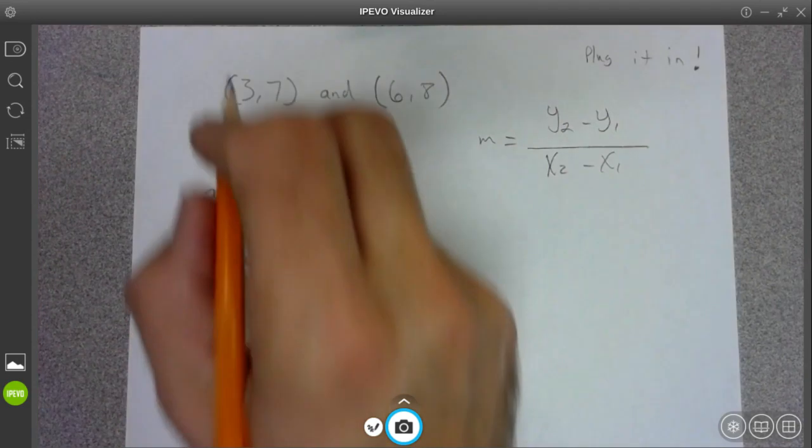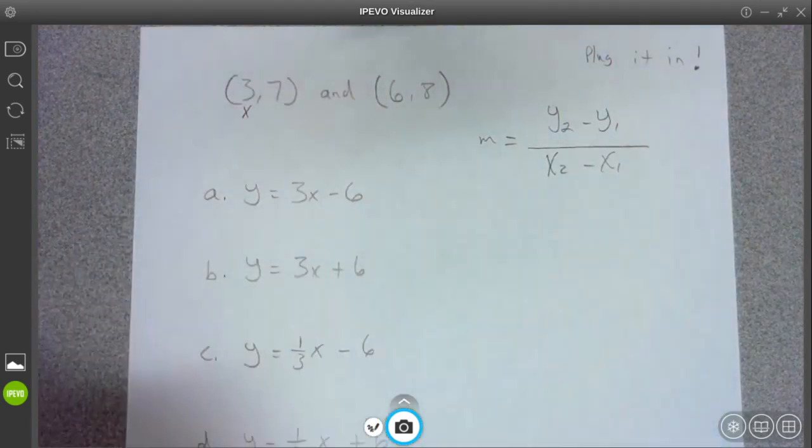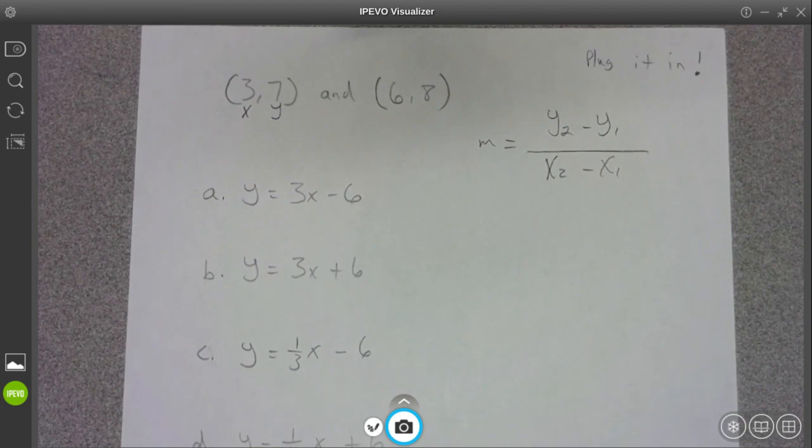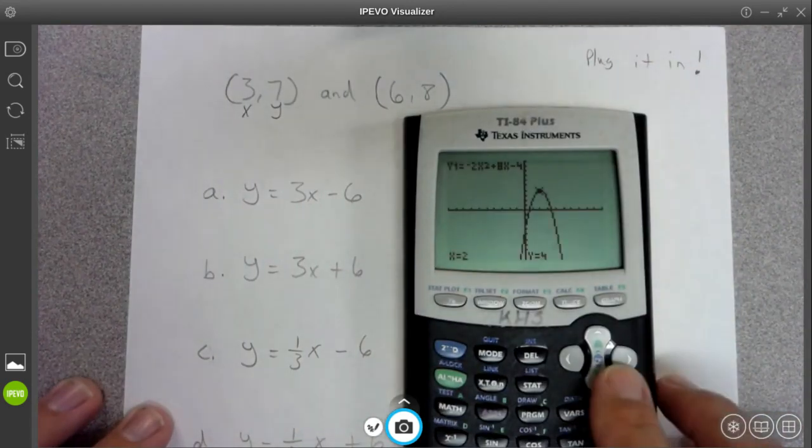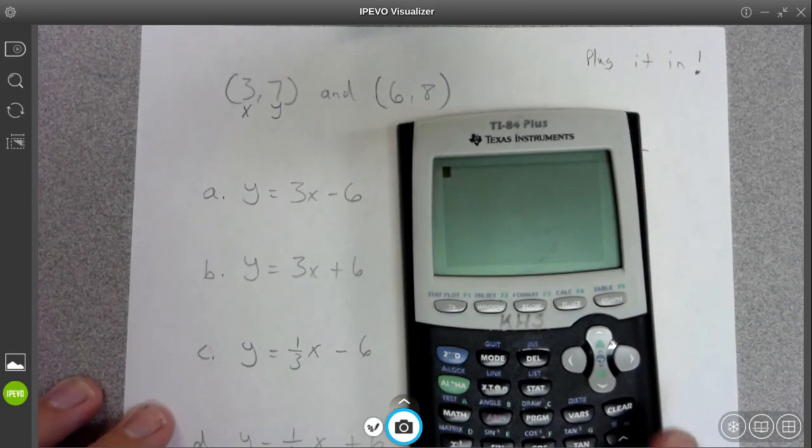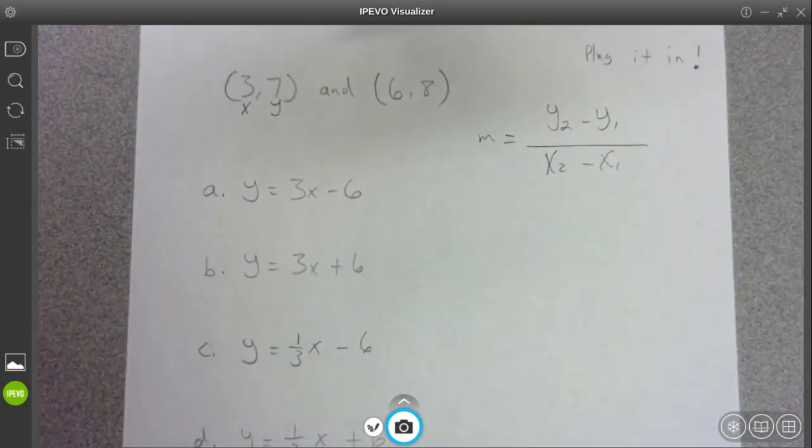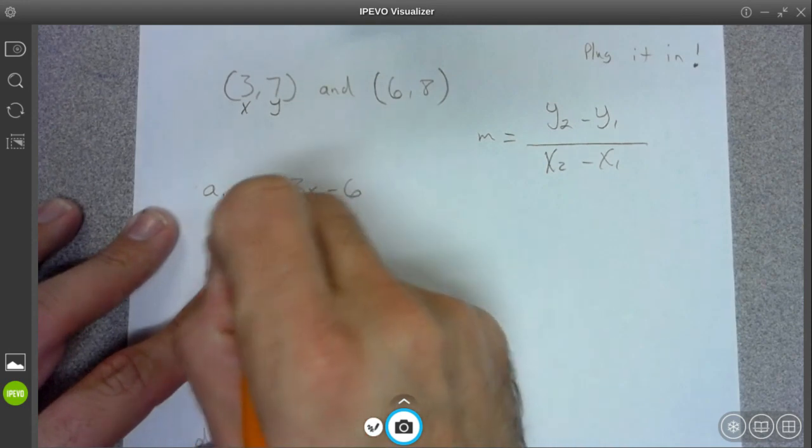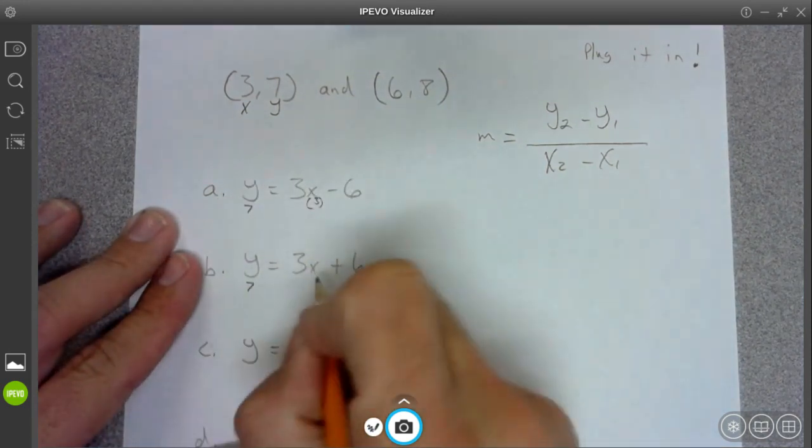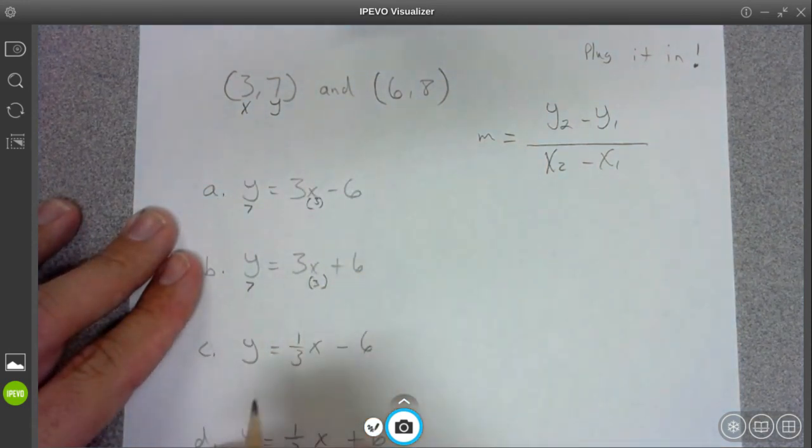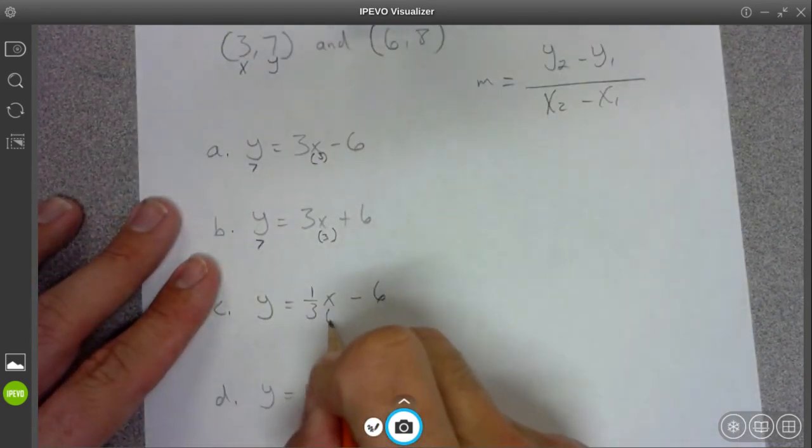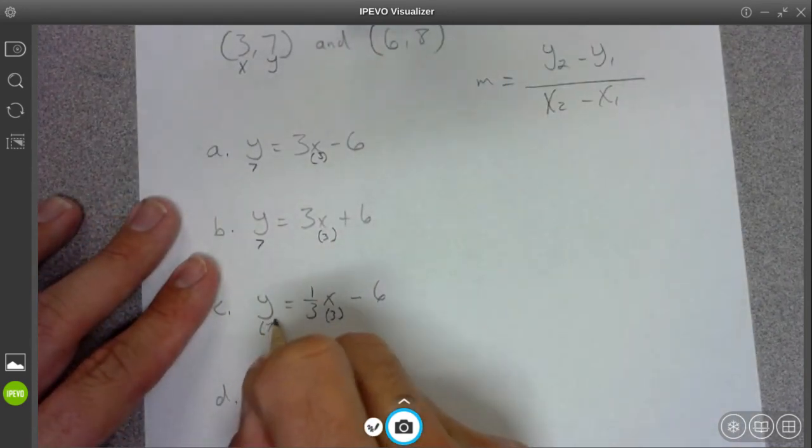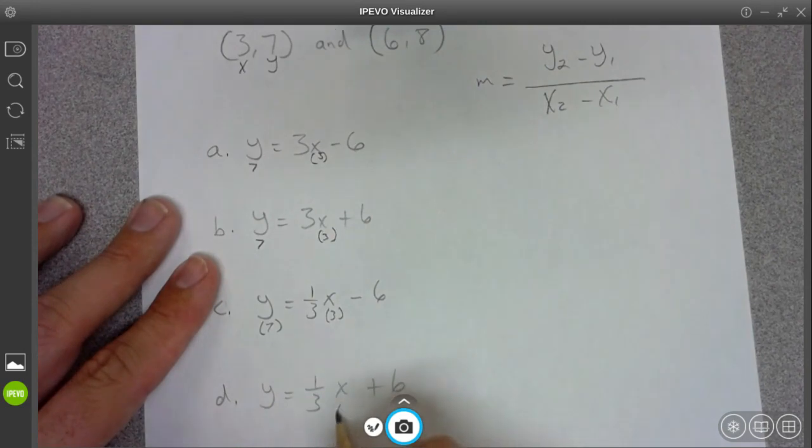Alright. What I'm going to do is I'm going to plug in three for X and seven for Y. Here, I'm just going to use my calculator. No, I ain't using the calculator. It's too easy. Alright. So three for X, seven for Y. Seven for Y, three for X. Three for X, and I'm going to plug in seven for Y.